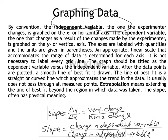Slope is going to have a lot of meaning across many different graphs and will come up over and over again. Slope is change in y over change in x — some people call this rise over run, the vertical change over the horizontal change. You can also think of slope as the change in the dependent variable over the change in the independent variable.